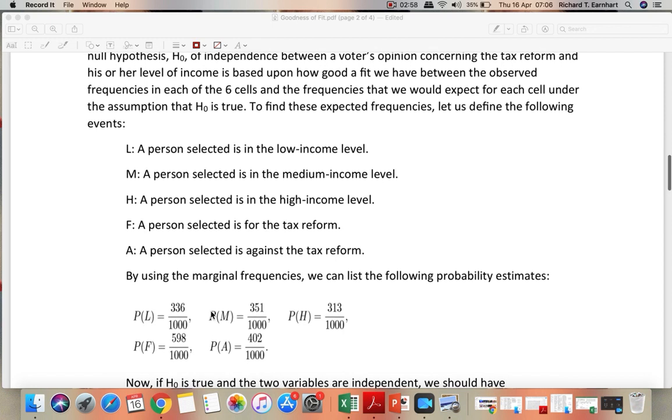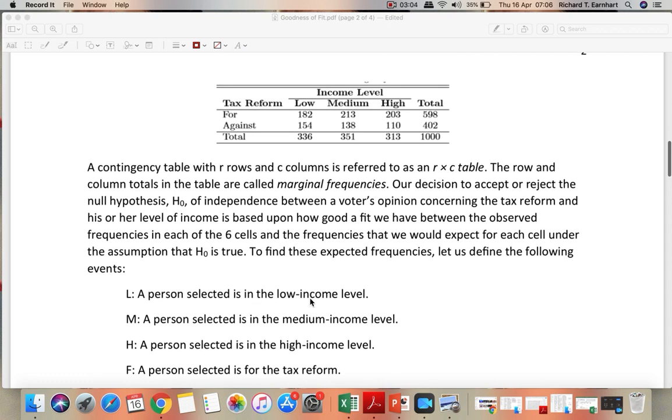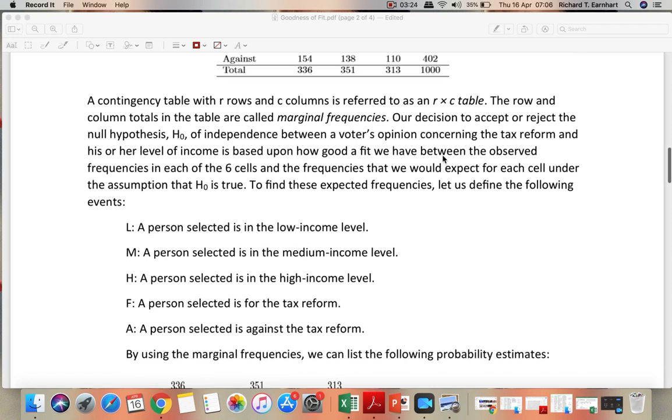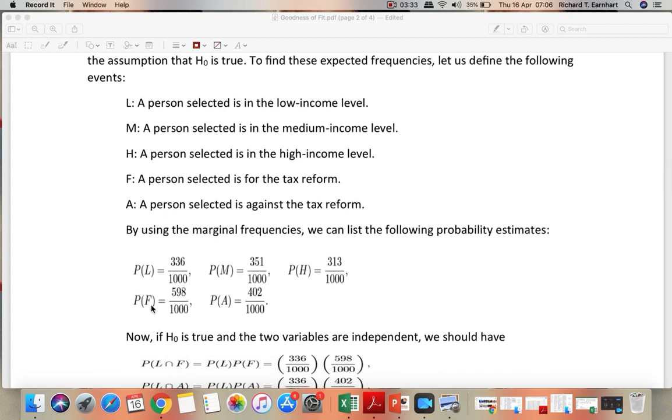Using the marginal frequencies, for example, the probability of L, or the probability that the person is in the low income level, would be 336 out of the grand total, 1,000. So, the probability will be 336 over 1,000. In a similar manner, we have the probabilities for M, H, F, and A using the marginal frequencies.